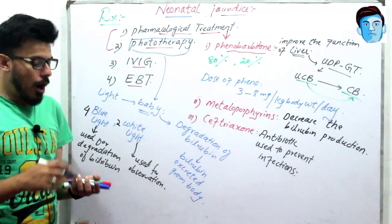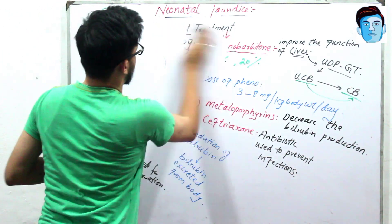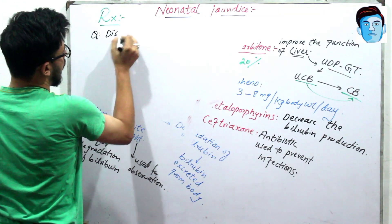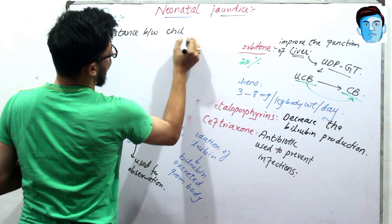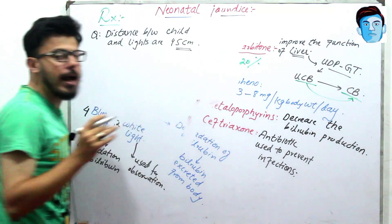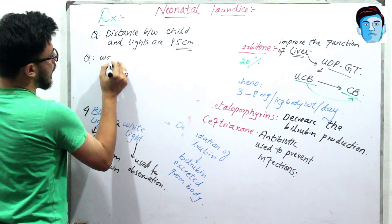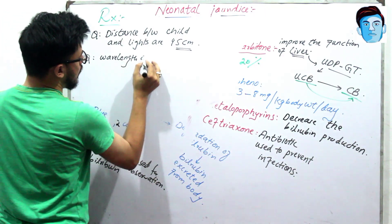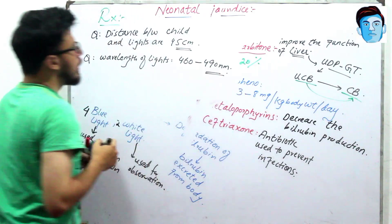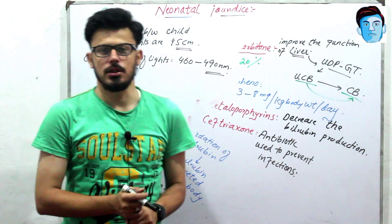An important detail is the distance between the child and the light, which is 45 centimeters. The wavelength of the light used in phototherapy is 460 to 490 nanometers. So students, read all about the pathological jaundice, and thank you so much.